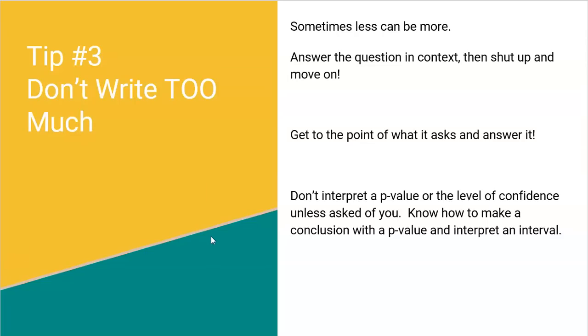Tip number three, don't write too much. Sometimes less is actually more. Answer the question in context, then shut up and move on. Get to the point of what it asks and answer it. Oftentimes kids will try to, they panic and they're like, okay, I'm gonna keep adding this. I'm gonna keep adding this. I'm gonna keep adding this. And then they actually end up saying something that's wrong or doesn't even apply to the problem whatsoever. So keep it simple. Don't interpret a p-value or don't interpret a level of confidence unless it's asked of you. In the actual inference procedure, you don't have to tell me what a p-value is. You just gotta find it. So sometimes kids will try to do too much and it's either wasting time or it's gonna actually lead to something that's wrong. And if there's something wrong, you might get a deduction for it.